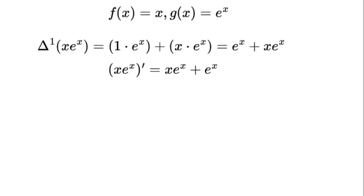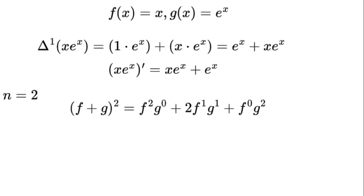Now let's level up to the second derivative, setting n equals 2. f plus g to the power of 2 equals f to the power of 2 times g to the power of 0 plus 2 times f to the power of 1 times g to the power of 1 plus f to the power of 0 times g to the power of 2.